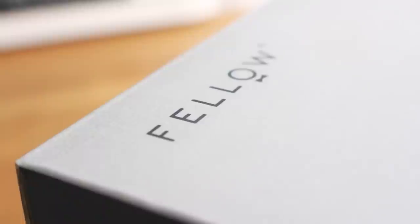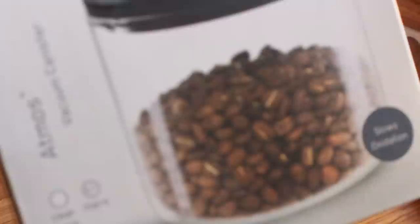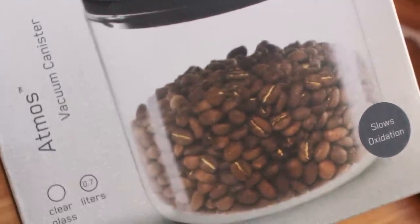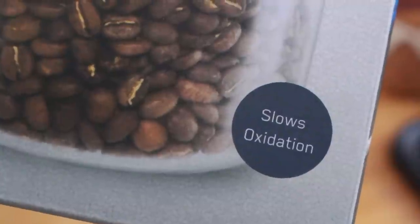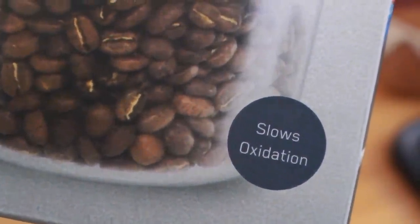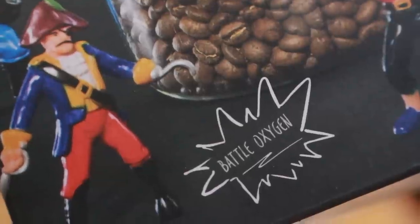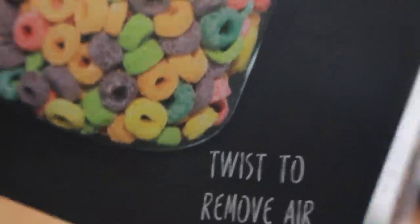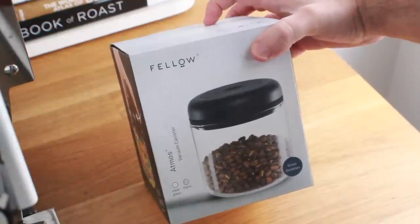What's up everyone, it's Prometheus, and today we're looking at another Fellow product. This time we're diving into the Fellow Atmos vacuum canister. First off, you see 'slows oxidation', then you turn the box and see 'battle oxygen', and give it another turn and twist to remove air. So any guesses on what this product actually does?